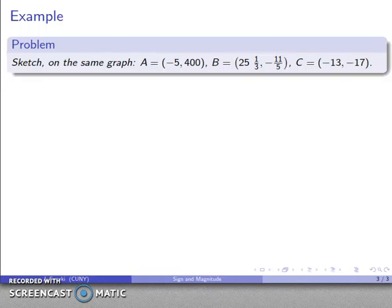So, for example, let's say I want to sketch on the same graph a whole bunch of points: negative 5, 400; 25 and 1/3, negative 11/5; negative 13, negative 17. So my first point, A, has coordinates negative 5, 400. So how do I graph that?